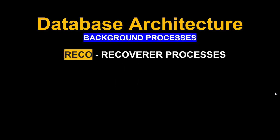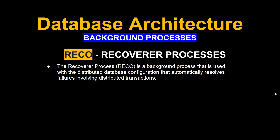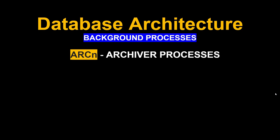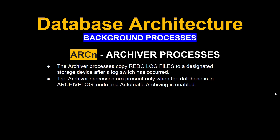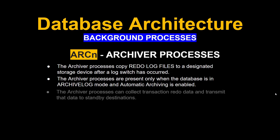Next is the Recover Process. The Recover Process is a background process used with distributed database configuration that automatically resolves failures involving distributed transactions. Next is the Archive Process — an optional background process everyone should know. The Archiver Process copies Redo Log files to a designated storage after a log switch has occurred. It is present only when the database is in Archive Log mode and automatic archiving is enabled. The Archiver Process can also collect transactions, redo data, and transmit that data to a standby destination.